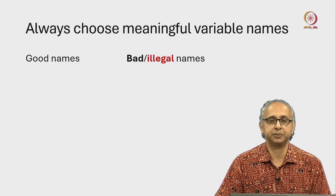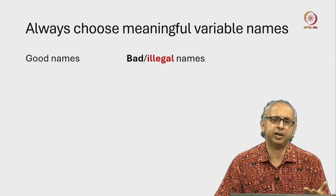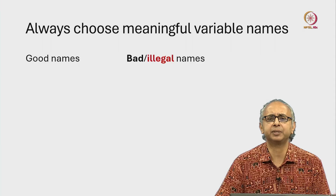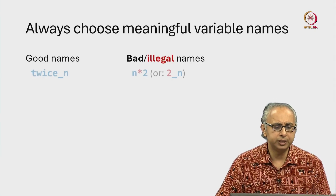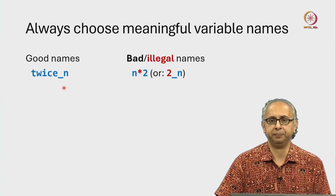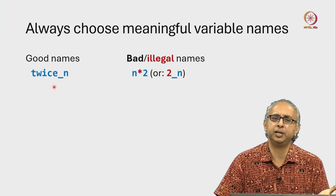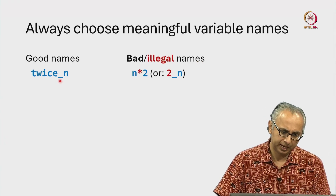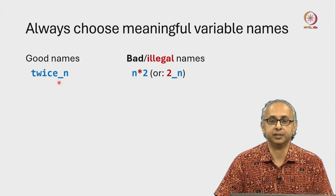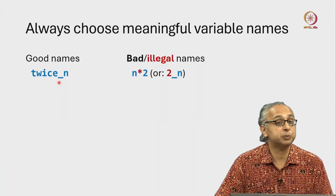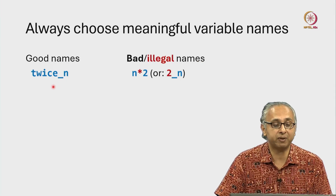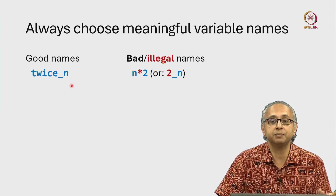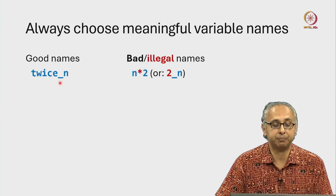For example, say I have a variable n and I want to calculate twice of n. A good name is twice_n. I'm using the readable word 'twice' and using underscore to separate things. I cannot use a space inside the name of a variable, so I should use an underscore to indicate the separation.